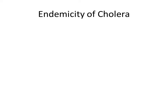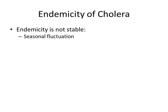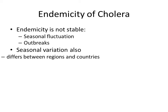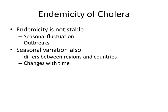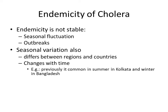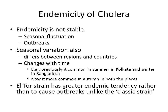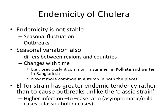When an area is endemic for cholera, the endemicity is not stable; it shows seasonal fluctuations and there may be occasional outbreaks. The seasonal variation differs from region to region and changes with time. For example, cholera outbreaks were previously common in summers in Kolkata and during winters in Bangladesh, but now at both places it occurs more commonly in autumn. The LTOR strain has a greater endemic tendency rather than causing outbreaks, unlike classical strains, because of a higher infection-to-case ratio with more asymptomatic or mild cases.